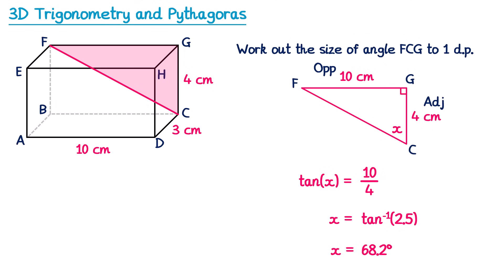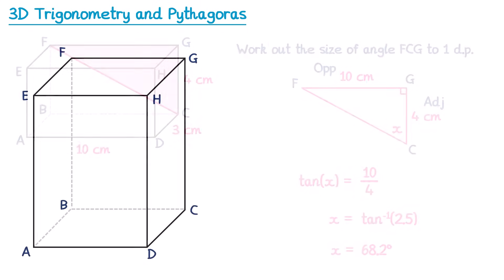So in all of these questions the key thing to do is to find the right-angled triangle that involves the information we've been asked for. Sometimes the questions are a little bit more tricky though — let's have a look at a harder one.